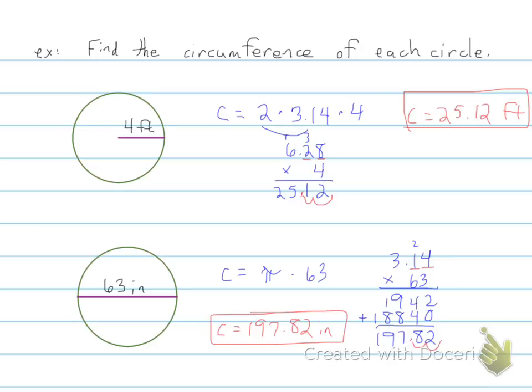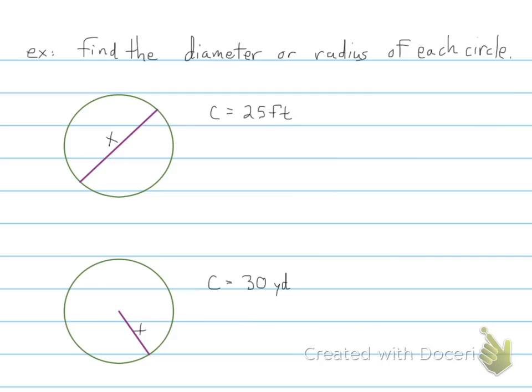Okay. We're going to do a couple more examples and this is finding the reverse. So this time we're going to be given the circumference and have to find the diameter or the radius of each circle.